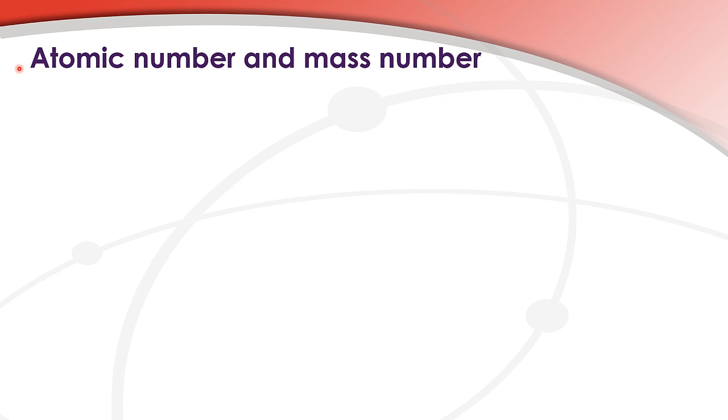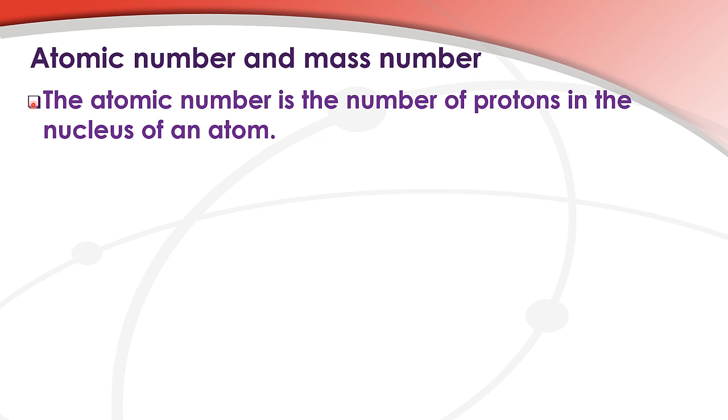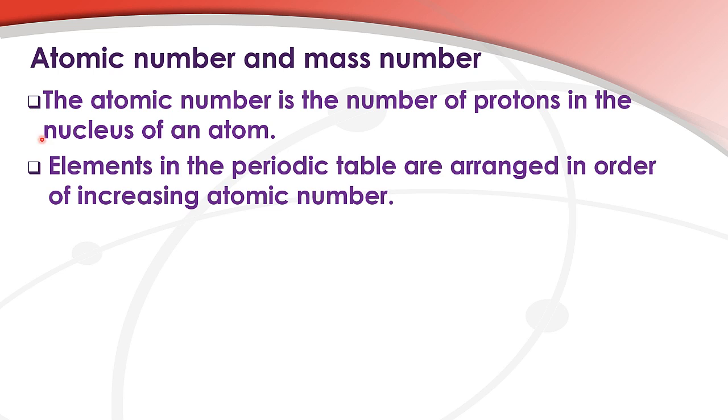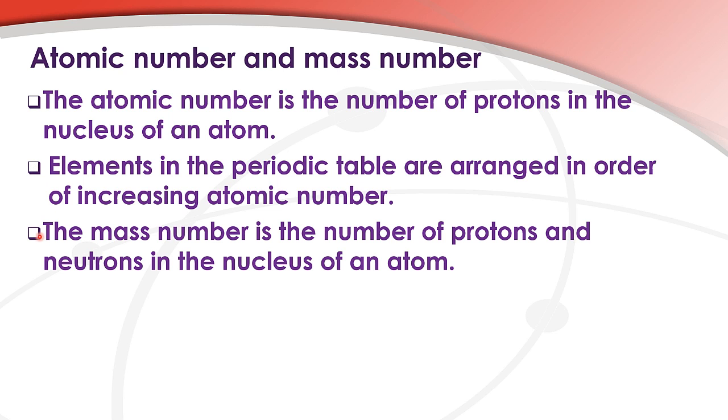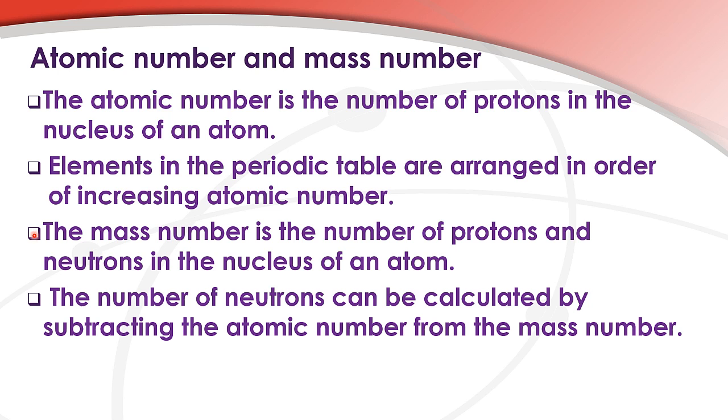Atomic number and mass number. The atomic number is the number of protons in the nucleus of an atom. Elements in the periodic table are arranged in order of increasing atomic number. The mass number is the number of protons and neutrons in the nucleus of an atom. The number of neutrons can be calculated by subtracting the atomic number from the mass number.